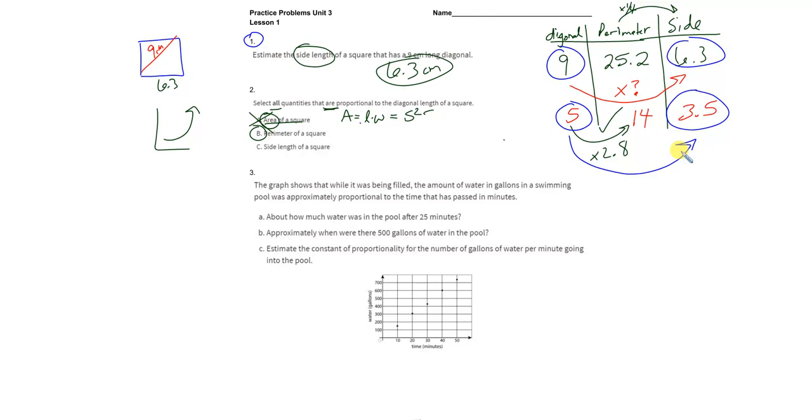So, I'm going to do 6.3 divided by 9 and 3.5 divided by 5. And for both of them, I get 0.7.